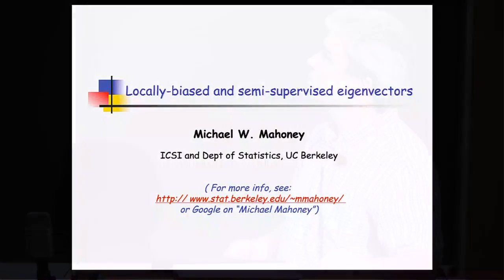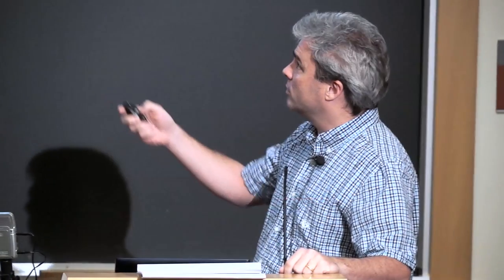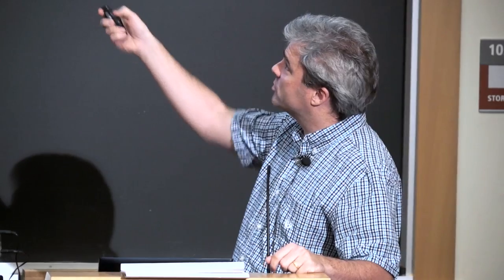What I thought I'd talk about today is what I'll call locally biased eigenvectors, or if you're a machine learner, a name that might be more palatable: semi-supervised eigenvectors — but they'll essentially be the same thing. The motivation is there are a lot of problems, think latent semantic indexing, where you compute global eigenvectors. The question is what do those global eigenvectors tell you, and what if you can only compute so many and you want to get more fine-scaled information?